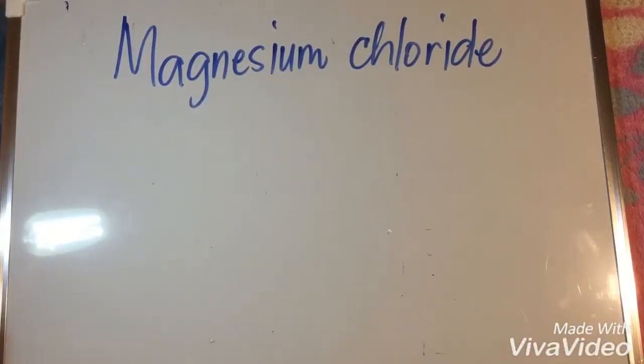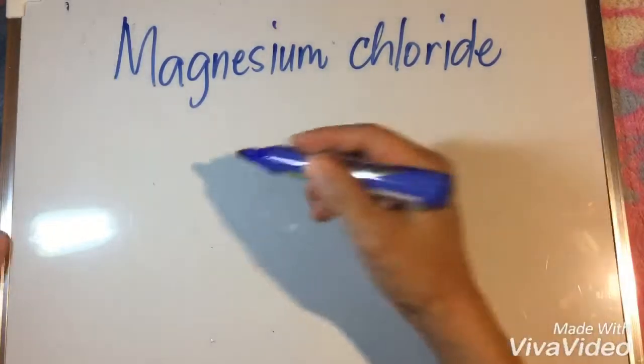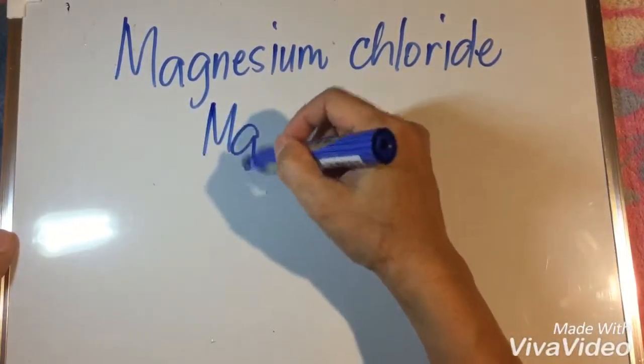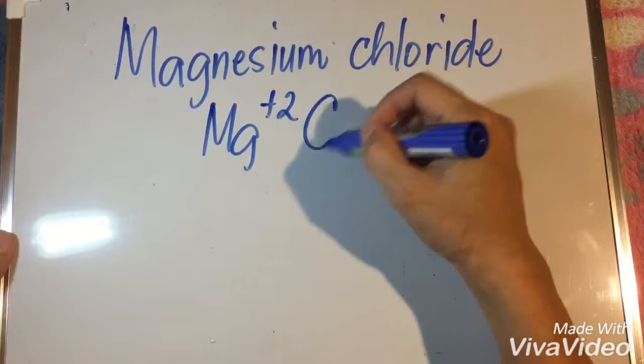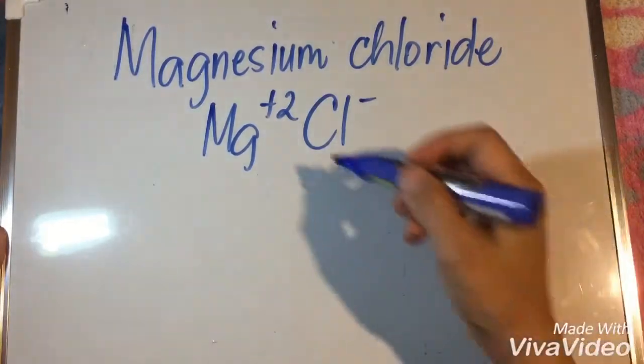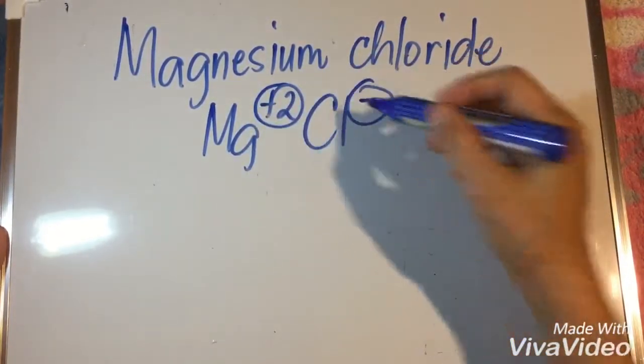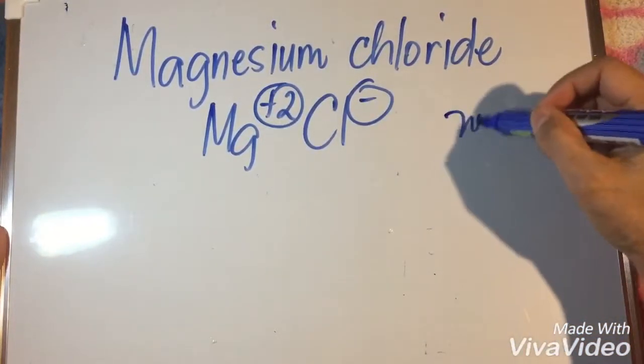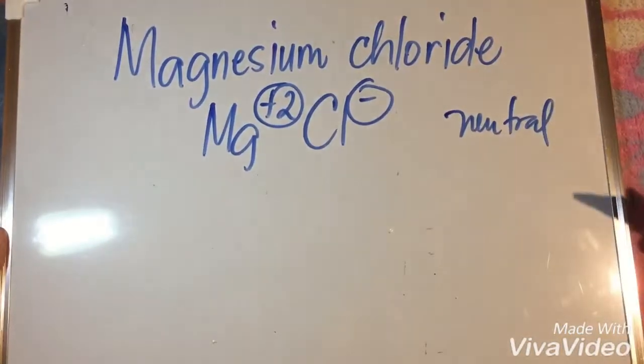Let us now try writing the chemical formula of the first compound, magnesium chloride. Magnesium chloride is composed of two elements, magnesium and chlorine, meaning it is composed of two ions: the magnesium ion and the chlorine ion. Now, in writing the chemical formula, we should make the charges equal because chemical formulas should have a neutral charge.